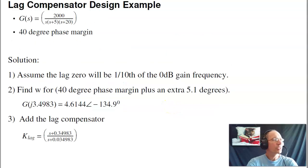So let's go through a design example. Suppose I have the same plant we had before. This would be like a DC motor. I want to control the position. Designed so I've got a 40 degree phase margin. The solution would be, first assume the rule of thumb you're using, one-third to one-tenth. Let's choose the number one-tenth. I'm going to place the lag zero, one-tenth of my zero dB gain frequency, whatever that is.